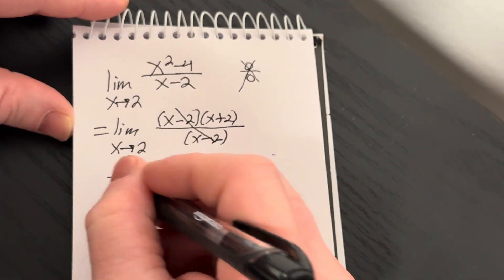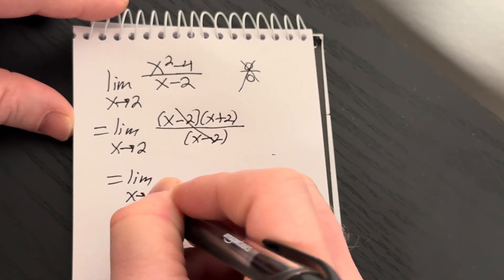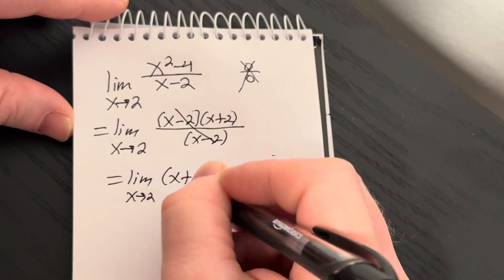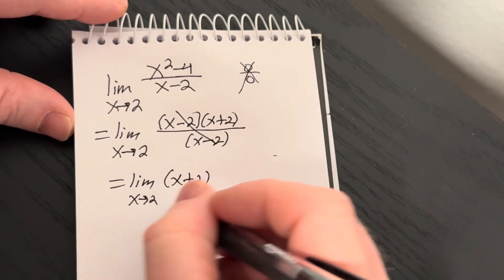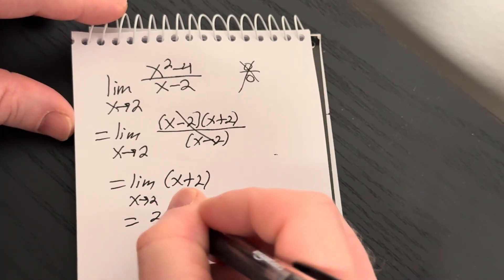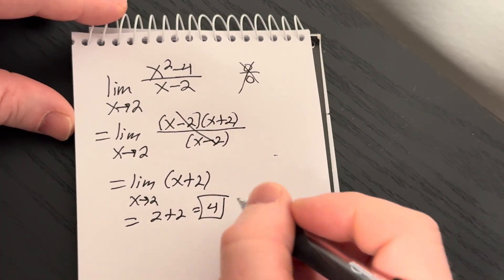These cancel, so this is the limit as x approaches 2 of x plus 2. And now we can take the limit, you drop the limit sign, you get 2 plus 2, which is equal to 4.